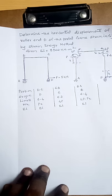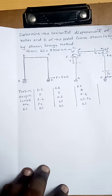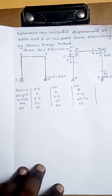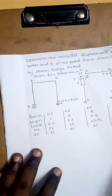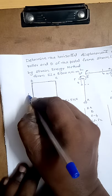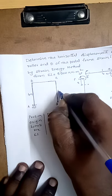Now we will study how to calculate the deflection in portal frames by using strain energy method. The problem is: determine the horizontal displacement of the roller end D of the portal frame shown in the figure by using the strain energy method. Here the flexural rigidity EI is given as 8500 kNm². End A is on hinge and D is on roller.